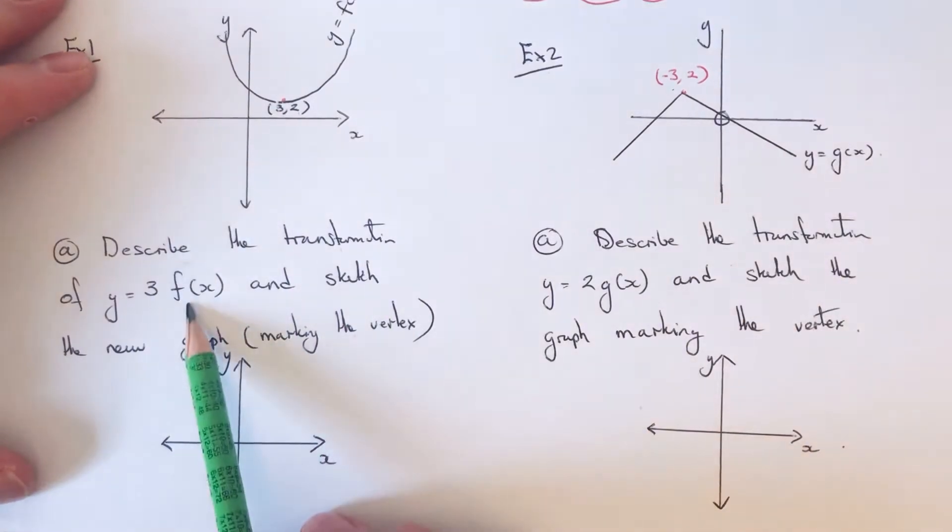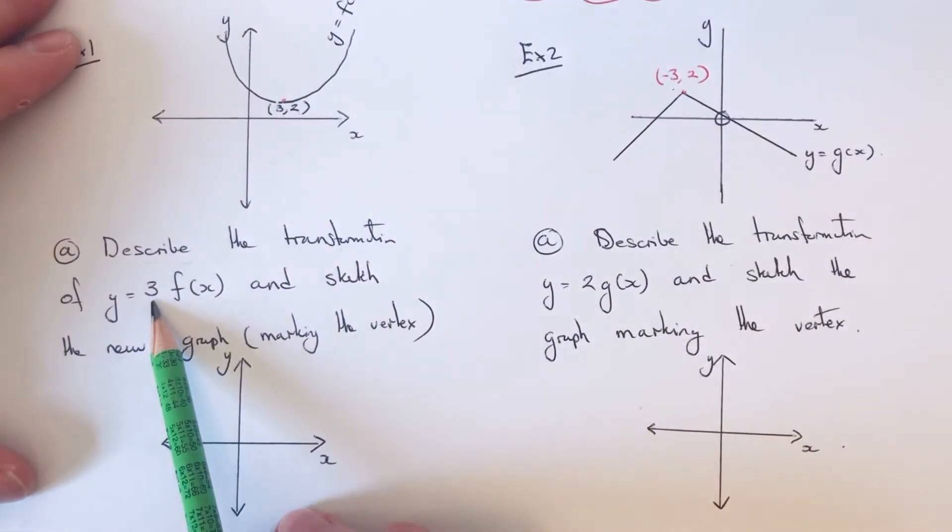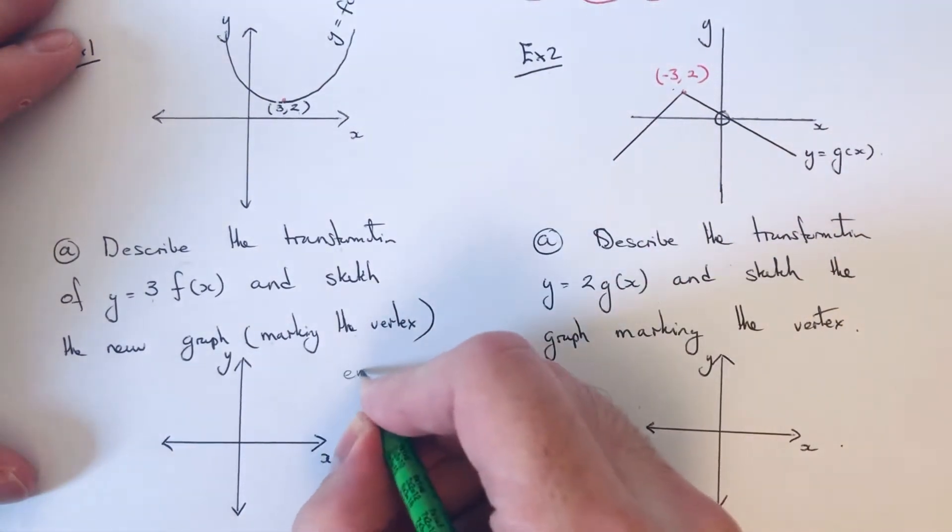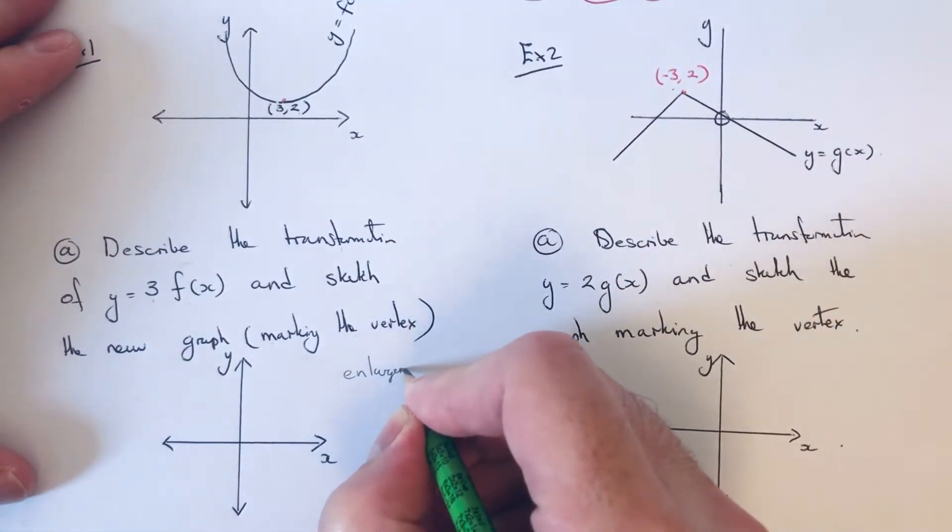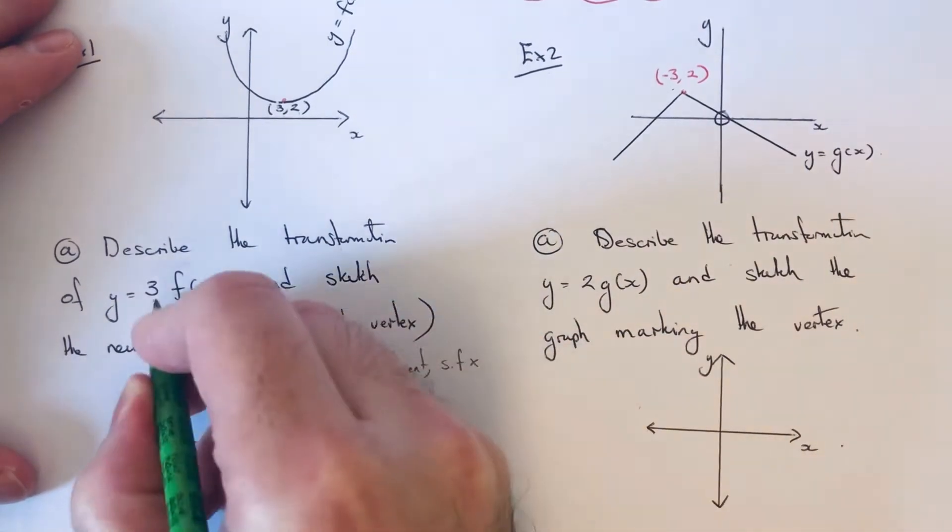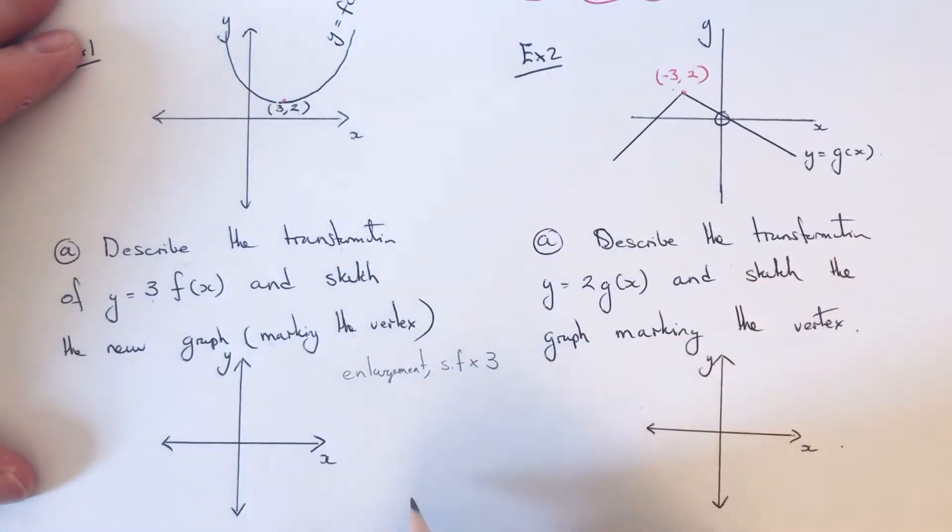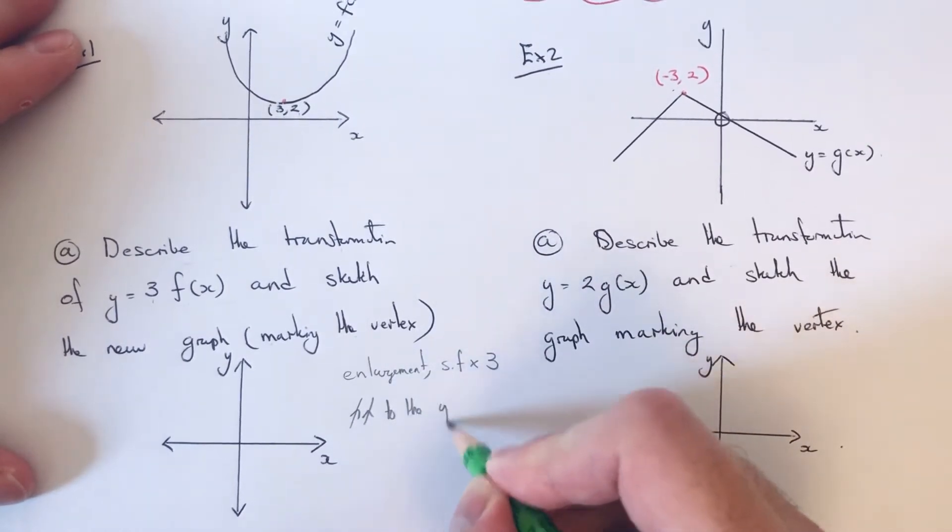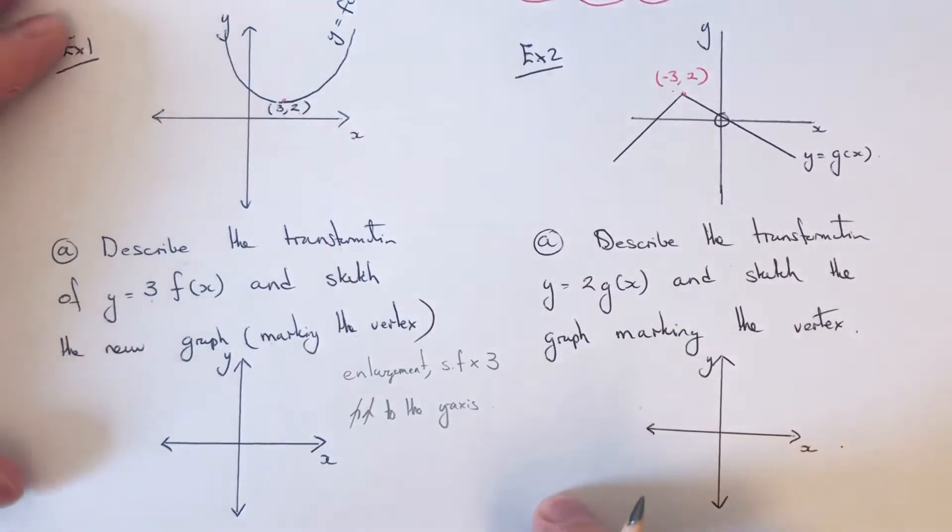Since f of x has been multiplied by 3, this is going to be an enlargement, and the scale factor of the enlargement will be times 3, and it's going to be parallel to the y-axis.